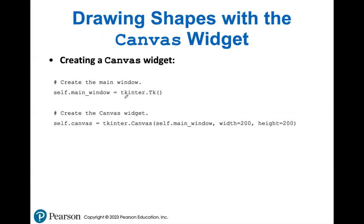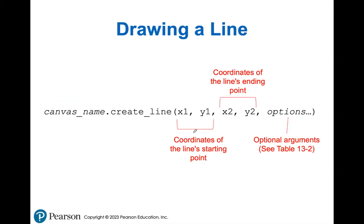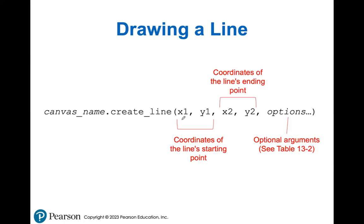To create a canvas widget: you create a main window first — same as always. Then you create the canvas widget and store it in a variable, specifying the width, height, and the window you want to create it in. The methods you can use are: create_line, create_rectangle, oval, arc, polygon, or text. For create_line, you have to specify the starting point x1 and y1, and where you want it to end x2 and y2. Drawing a cross example: we start at 0,0 going to 199,199, and the other line starts at 199,0 going to 0,199. Nothing too complicated — just draws two lines inside of our canvas.